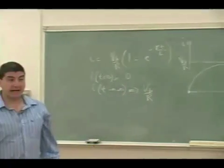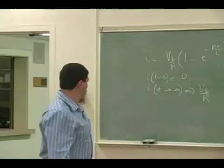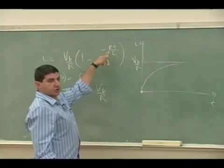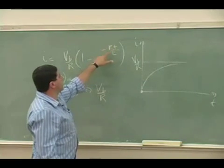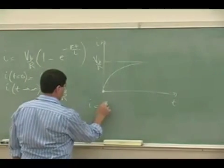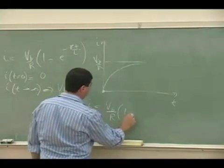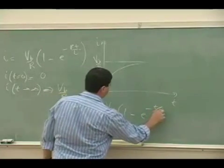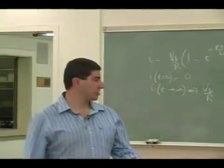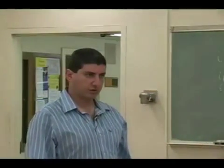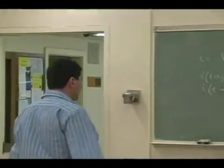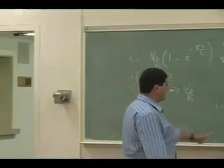Now what's the time constant of the circuit? What's the tau? In order for us to solve for what the tau is, we got to rewrite this so that it looks like 1 minus E to the minus T over tau, where tau is in units of seconds.